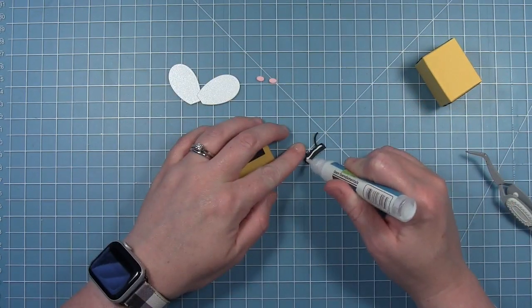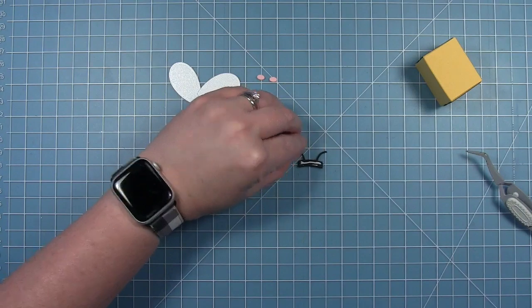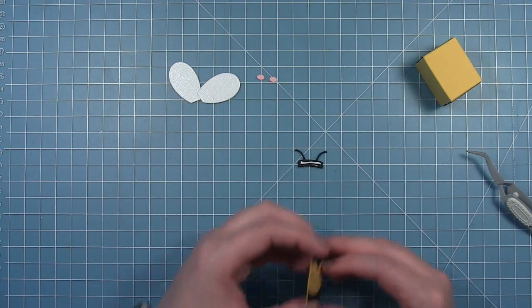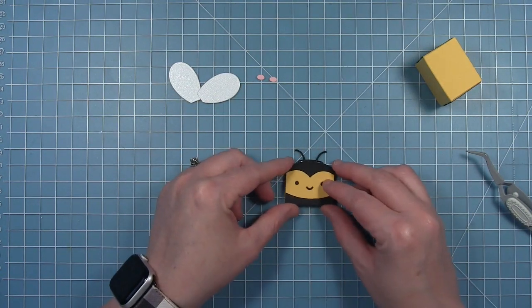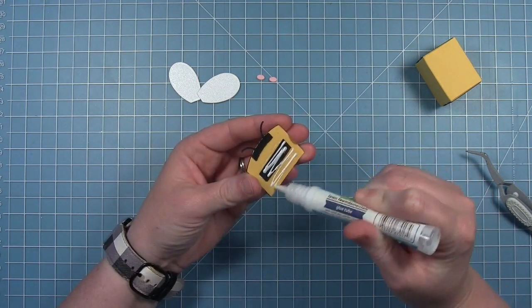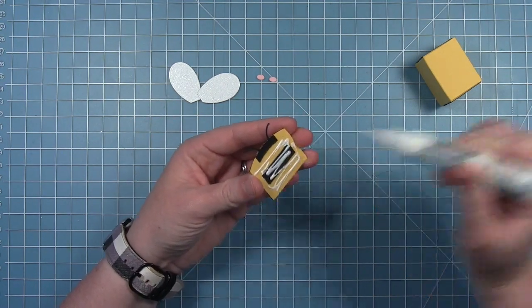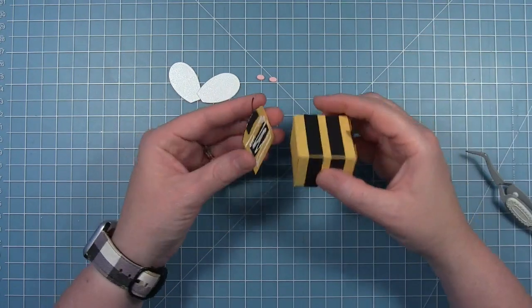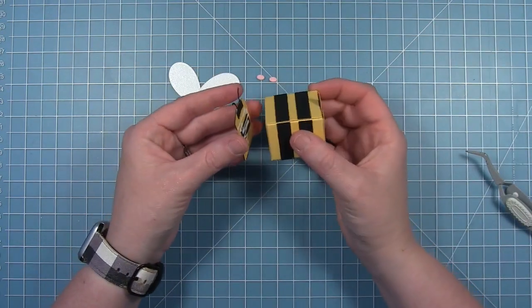Then I'm going to add his little antenna. I'm putting glue on that thick piece that's on the bottom and then I'm just going to layer that on the back side of his head so that you just see those two little tiny antennas sticking up. Now I can add the whole face to the front of my box.